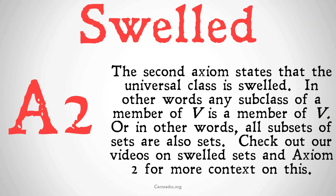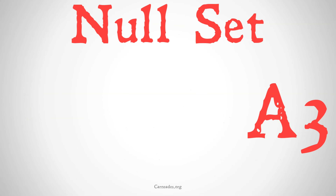The second axiom states that the universal class is swelled. In other words, any subclass of a member of V is also a member of V — or, in other words, all subsets of sets are also sets. Check out our video on swelled sets and axiom 2 for more context on this.